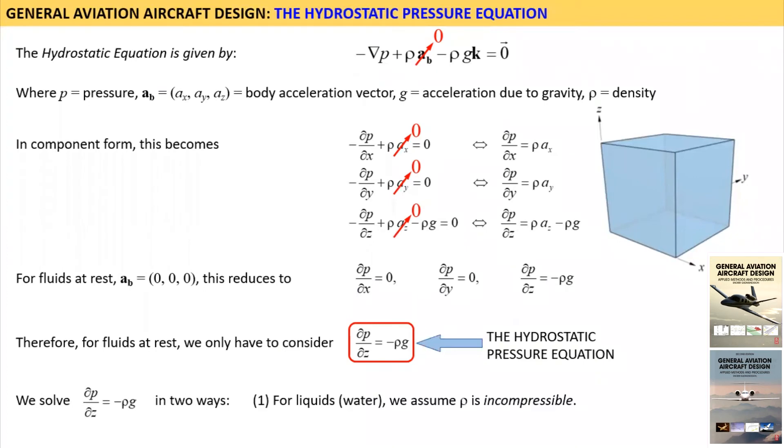One, for liquids such as water, we treat the density rho as incompressible. This means it is a constant.